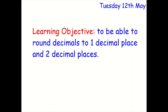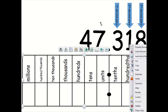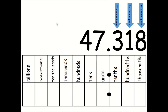What's a decimal place? A decimal place is this. Here, the three is classed as your first decimal place. The one is classed as your second decimal place, and your eight is classed as being in the third decimal place.